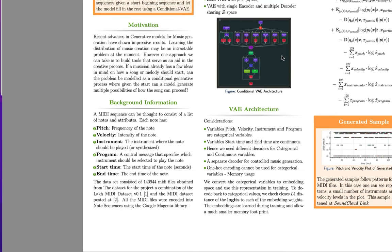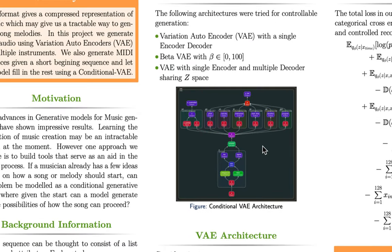The architecture itself is a Variational Auto Encoder, except with a couple of key changes. One, we don't have a single decoder, but we have a decoder for every categorical variable, like the pitch, velocity, and instruments. And then there's a decoder for the continuous variables, and another decoder for the conditional generation. So given the start of the music, that decoder generates the next sequence.